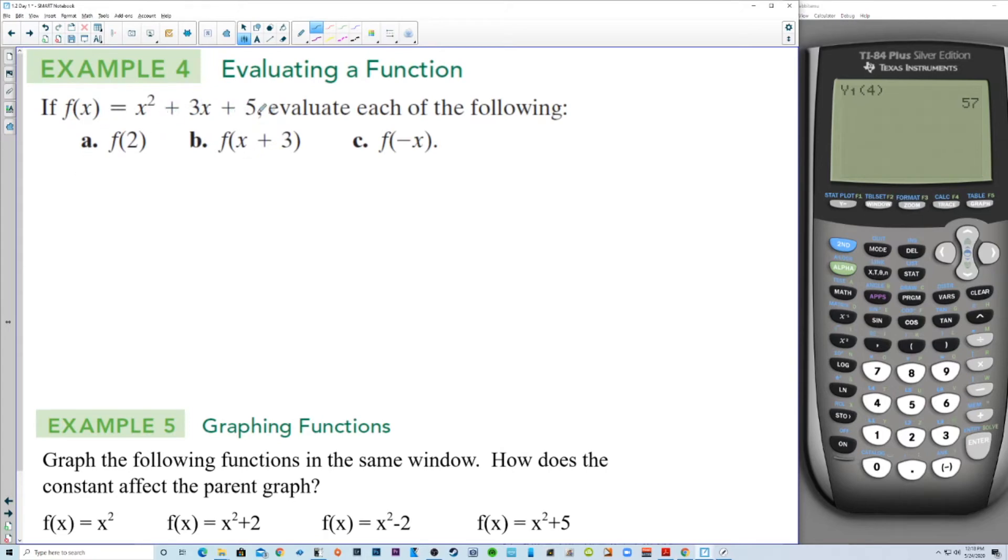Evaluate a function. If f of x is x squared plus 3x plus 5, evaluate each of the following. So a, f of 2 is equal to 2 squared is 4 plus 6 plus 5, and that's 15. b, f of x plus 3 is x plus 3 squared plus 3 times x plus 3 plus 5. That's x squared plus 6x plus 9 plus 3x, x plus 9 plus 5. So it looks like x squared plus 9x plus 18 and another 5 is 23. And then letter c, wherever we see an x, we're going to plug in a negative x. That's negative x squared plus 3 times negative x plus 5. So that's x squared because when you square the negative, it becomes positive minus 3x plus 5.